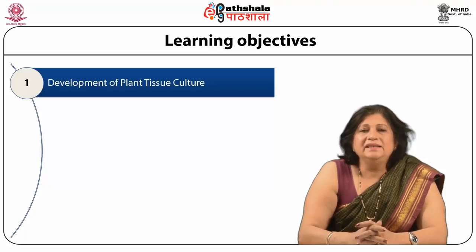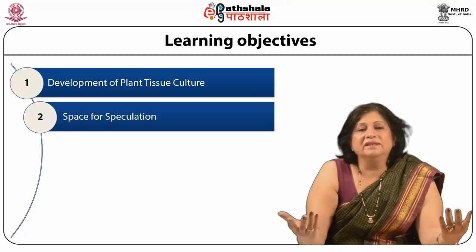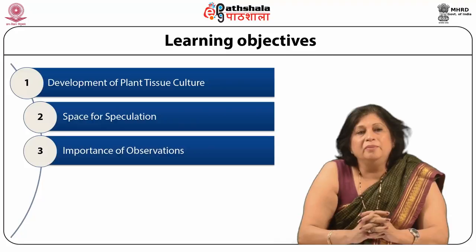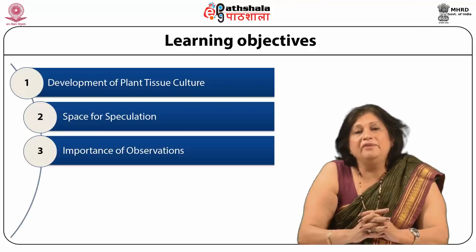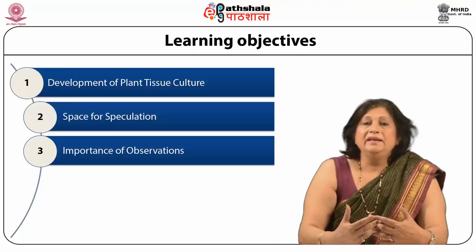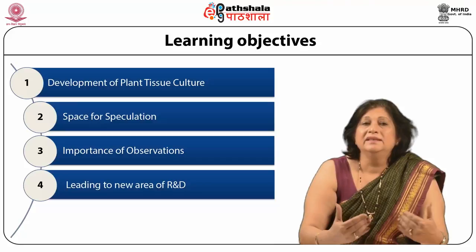Even sometimes as scientists we say seeing is believing, but somewhere there is space for speculation — your gut feeling about what might be happening because of a certain reason. One of the things which each scientist should understand is the importance of observation, because when you are doing research it is not that you have predefined answers. When you are developing your experiment you really have to observe very carefully what is happening, and that can lead to a discovery which no one had anticipated before. That is what is happening in all circles of science.